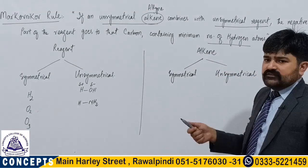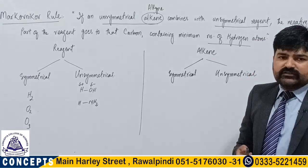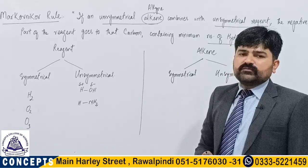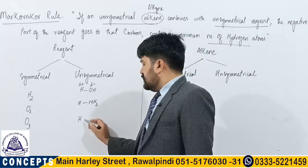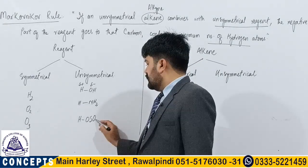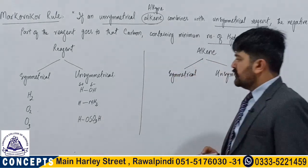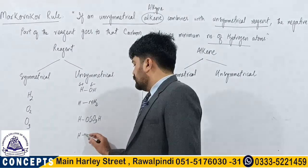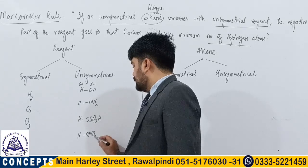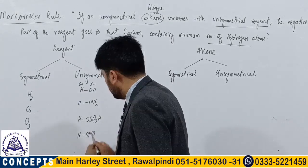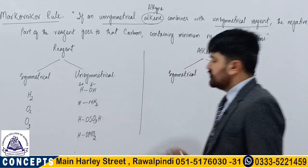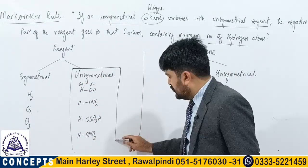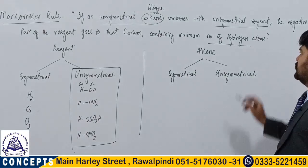So in a chemical reaction, this positive part will shift itself to the other side, and according to the definition the negative part goes to that carbon that contains the minimum number of hydrogen atoms. Some other examples of unsymmetrical reagents include sulfuric acid and nitric acid. So here we are interested only in unsymmetrical reagents, as stated in the definition.